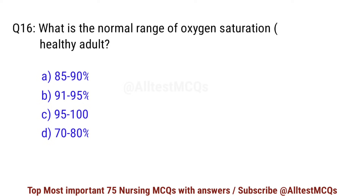Question number 16. What is the normal range of oxygen saturation (SpO2) in a healthy adult? Correct option is C: 95 to 100 percent.